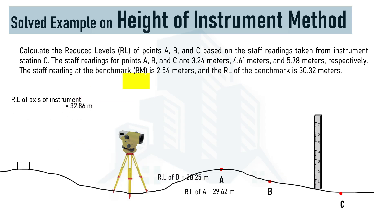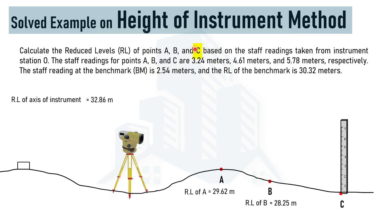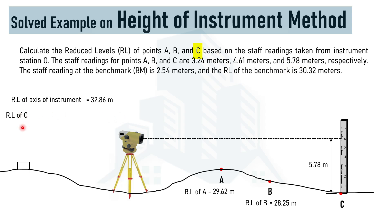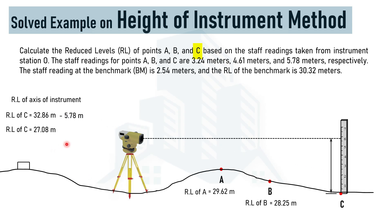Similarly, for point C, we shift the staff to point C. The staff reading at point C is 5.78 meters. Subtracting from the reduced level of the axis of the instrument: 32.86 − 5.78 = 27.08 meters, which is the reduced level at point C.